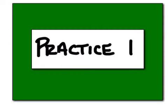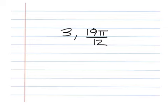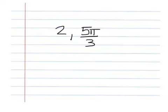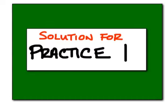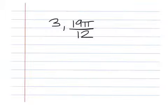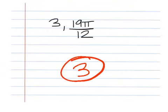Practice number 1: convert this to rectangular but only find the value for X. Bonus number 1 — the answer for this bonus is 2. Bonus number 2: bring me the X value of the rectangular version of this coordinate, which should be negative 3. Solution for practice number 1: this answer should be 3.